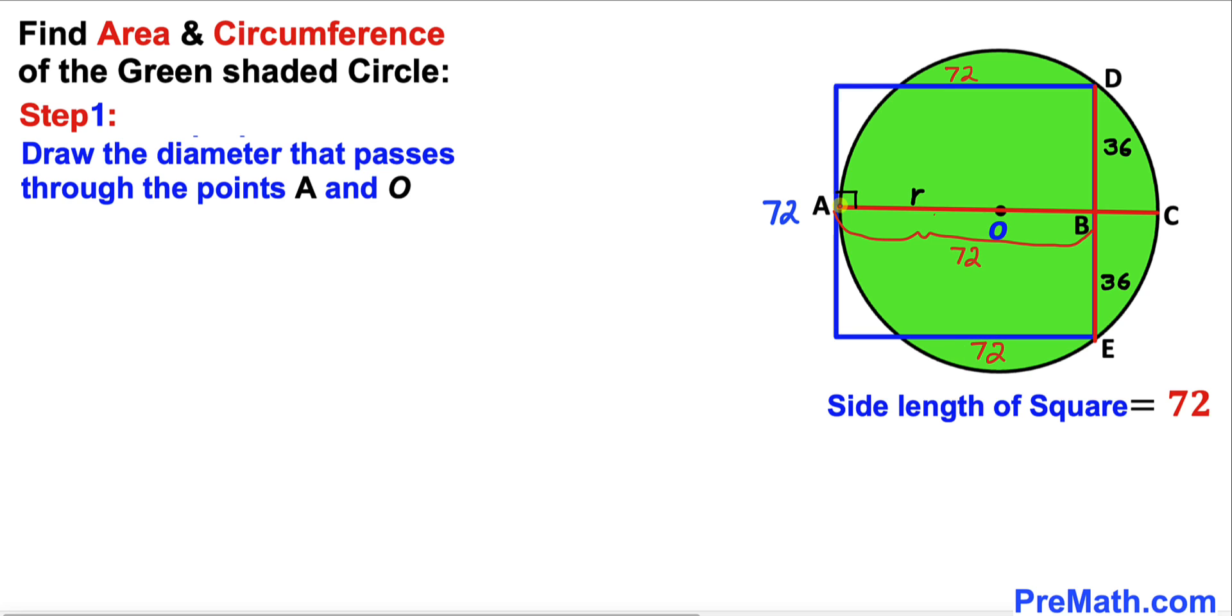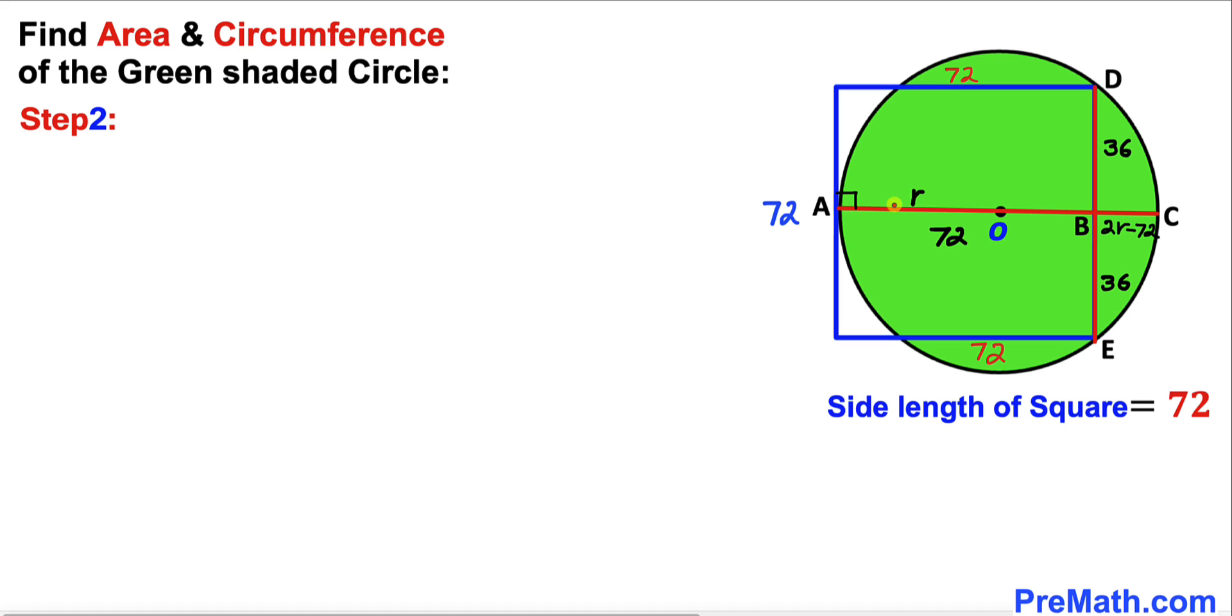Moreover we know that this length AB is same as this 72, so this is 72. We also know that this whole diameter is going to be 2 times the radius R, so therefore this distance BC is going to be 2R minus 72. Now we can see that we got these two chords AC and DE and they are intersecting each other at point B.